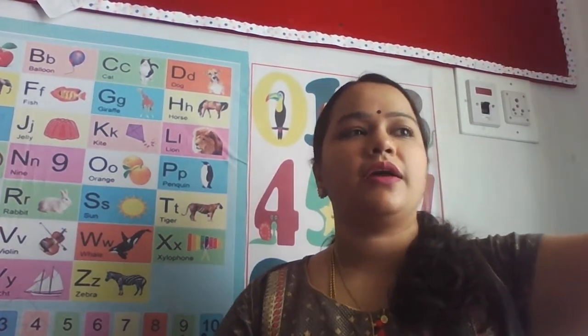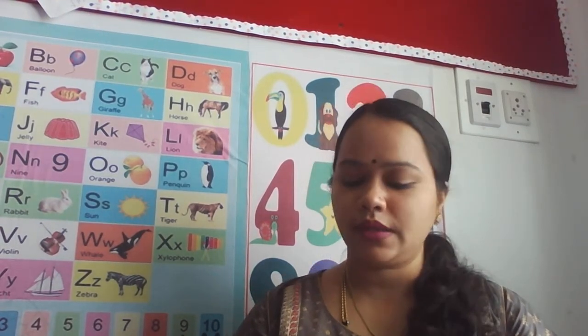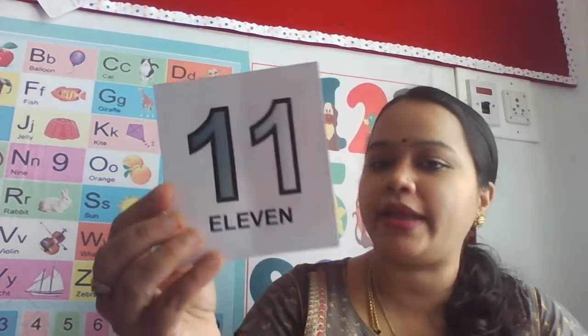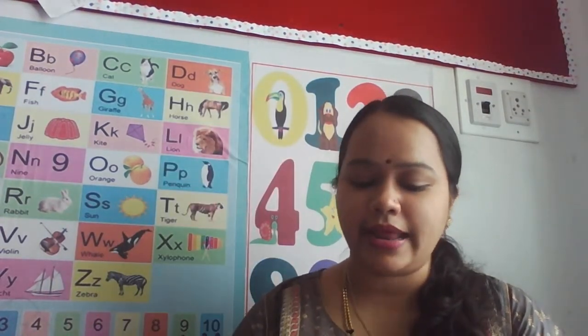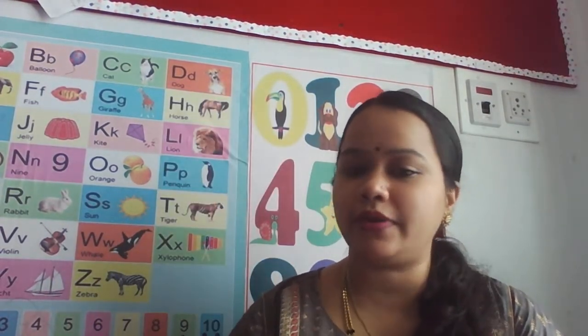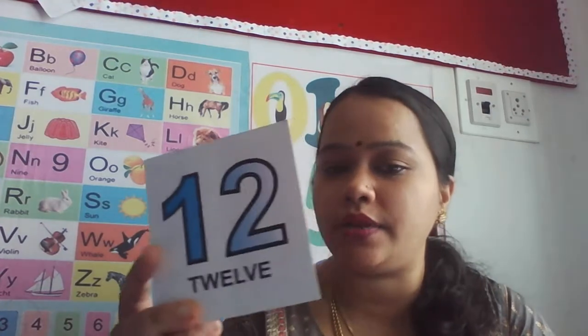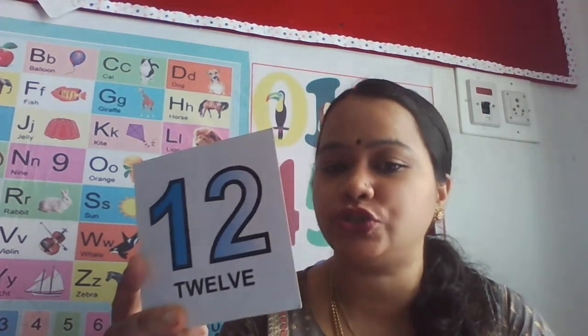Ten, after number is? Which number comes after ten? Ten, after number is eleven — one, one. Eleven, after number is twelve — one, two. Twelve.